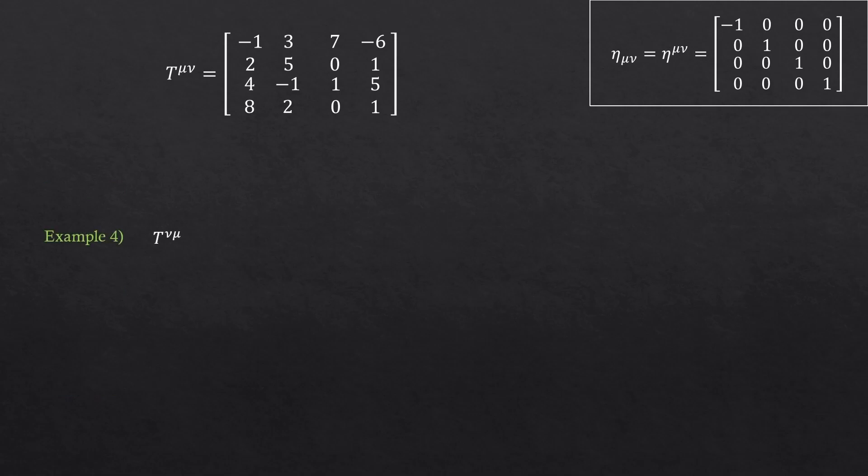Last example. Find t nu mu. So the indices are switched. Shouldn't it be just the original tensor? Because I said naming doesn't matter. Yeah, you're actually right. But let's say we're in the middle of solving this. And we need to know this t nu mu. This is clearly about the indices actually being switched. They're not dummy indices. In this case, this is just the transpose of the original tensor. Now think about it. As I mentioned before, the first index normally represents the rows of the matrix and the second index represents the columns of the matrix. If we're switching the row and the column, that is the transpose matrix. So it makes sense.